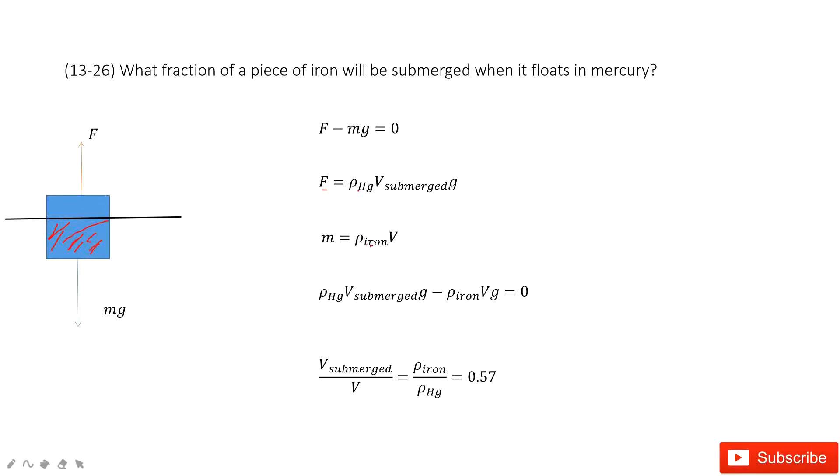Now we input F and mg into the equation. We get ρ_Hg V_submerged g minus ρ_iron V g equals zero. This gives us V_submerged over V equals ρ_iron over ρ_Hg. Inputting the known densities for these two materials, we get the ratio 0.57.